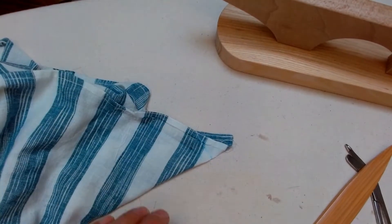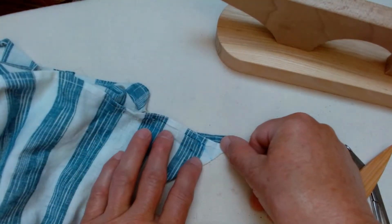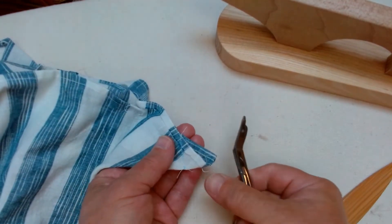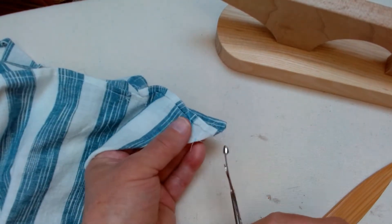Okay, we're back. I've stitched across the line that we marked. In this next step, I just like to trim this seam down to about a quarter of an inch.